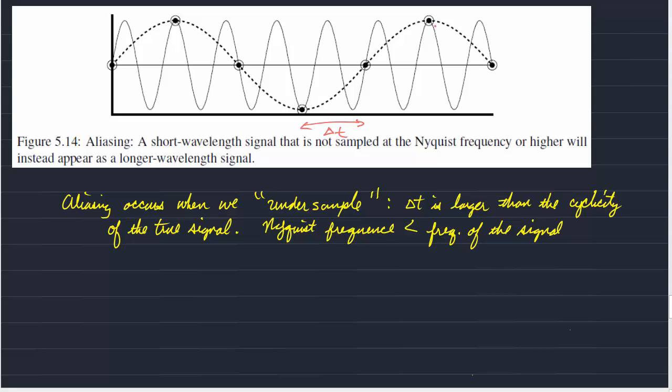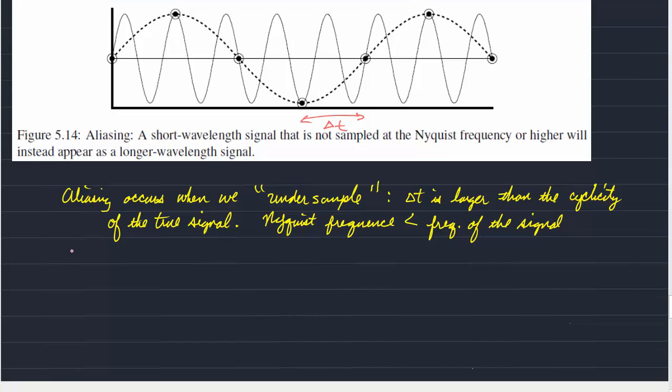So, aliasing describes what happens with undersampling when it converts a very high frequency signal to a very low frequency signal.